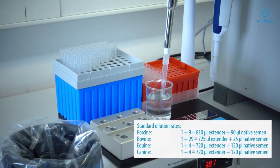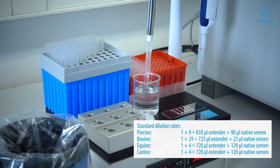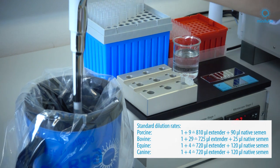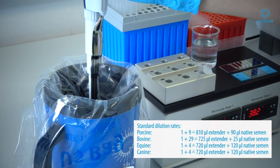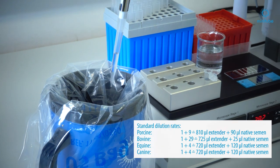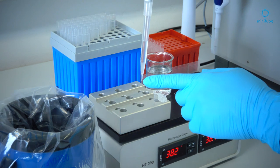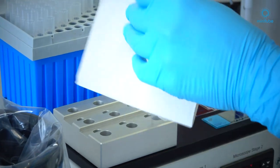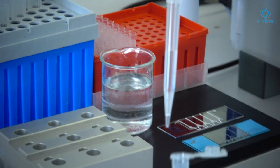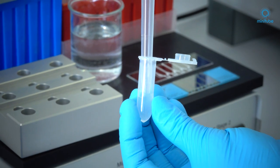First step is 810 microliters of extender. Then you go directly into the mixed ejaculate and take 90 microliters of native semen, and then 20 microliters of air to wipe the tip before you mix the sample into an empty and pre-warmed cup.